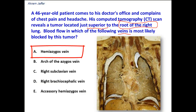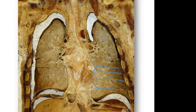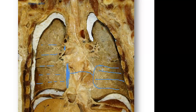The hemiazygous vein crosses the midline — it drains the lower intercostal spaces. The lower four posterior intercostal veins unite together and form the hemiazygous vein, which crosses the midline and drains into the azygous vein. The azygous vein is located behind the roots of the lung, and it drains the posterior intercostal veins on the right side. The posterior intercostal veins on the left side are collected into the hemiazygous vein and the accessory hemiazygous vein, which drains the middle posterior intercostal veins.